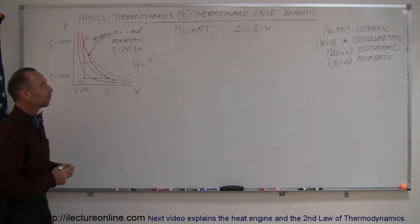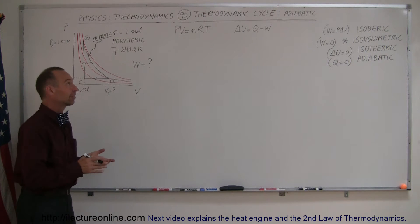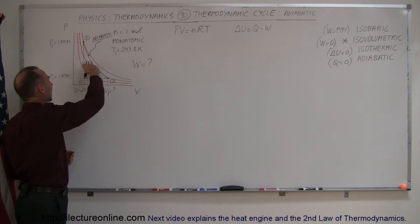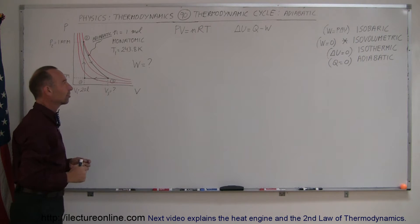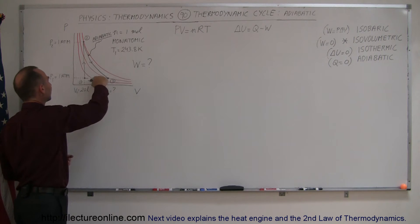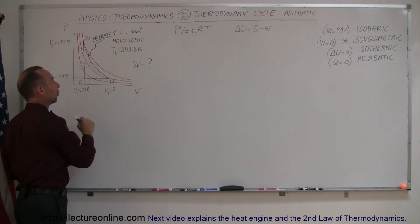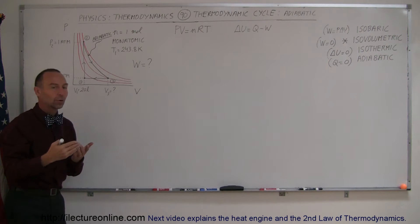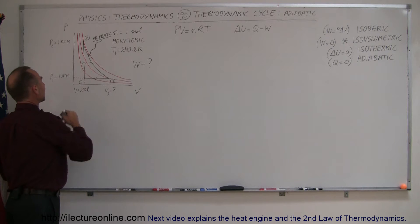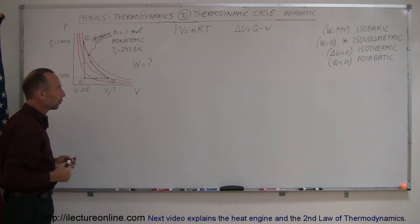Welcome to Electronline. Here's the fourth example of a thermodynamic cycle. In this case, we're going to include an adiabatic process in our cycle. Notice this is a complete cycle — we start at one, go to two, go to three, back to one. We end up back in the same state that we started with, and typically the cycle goes over and over again.